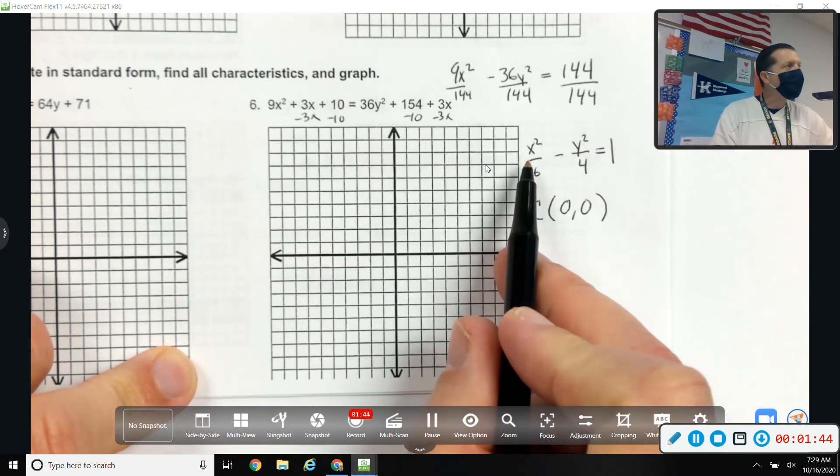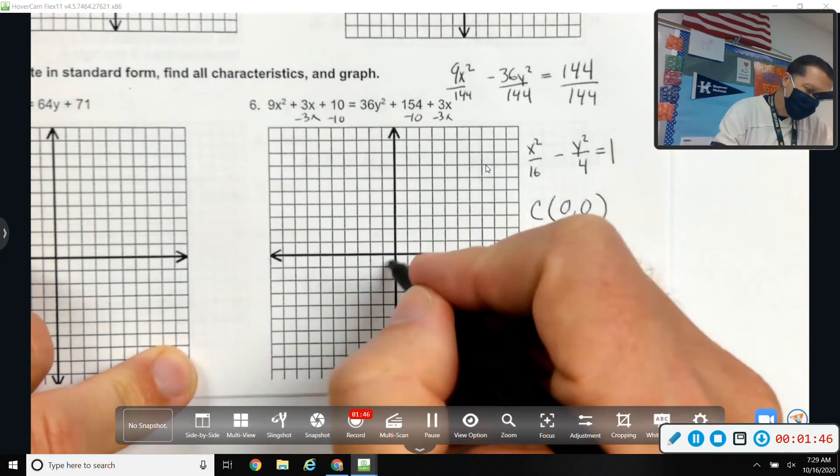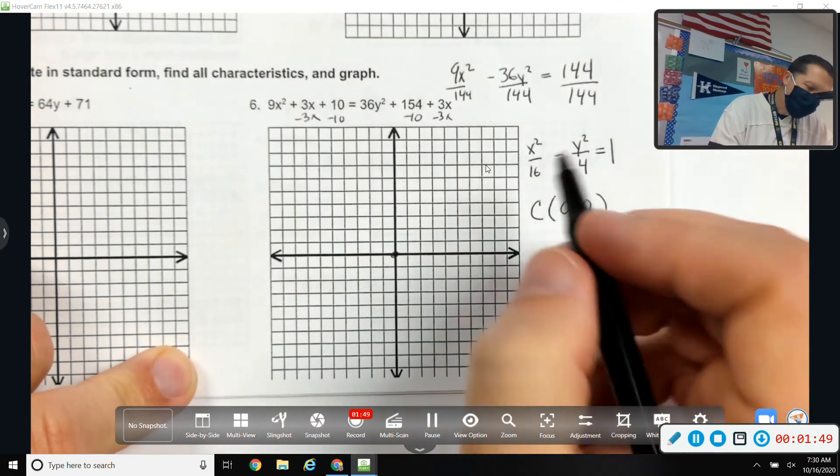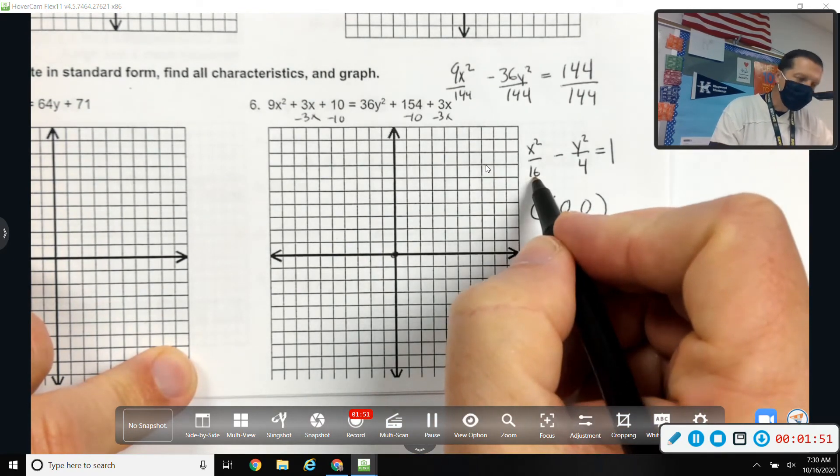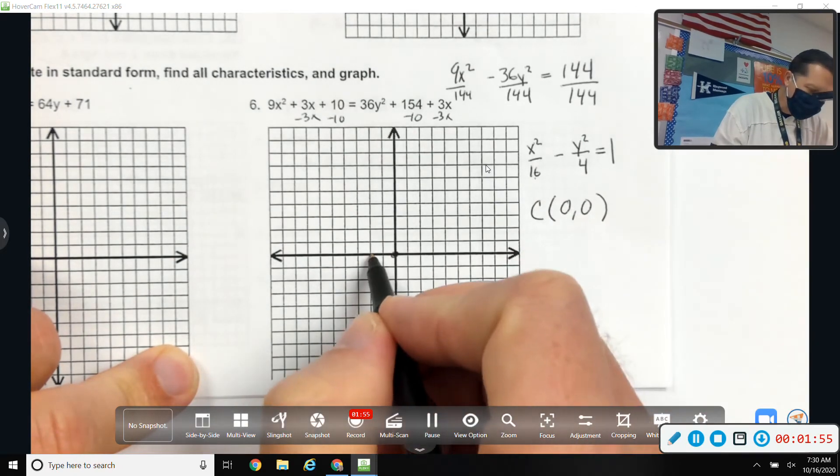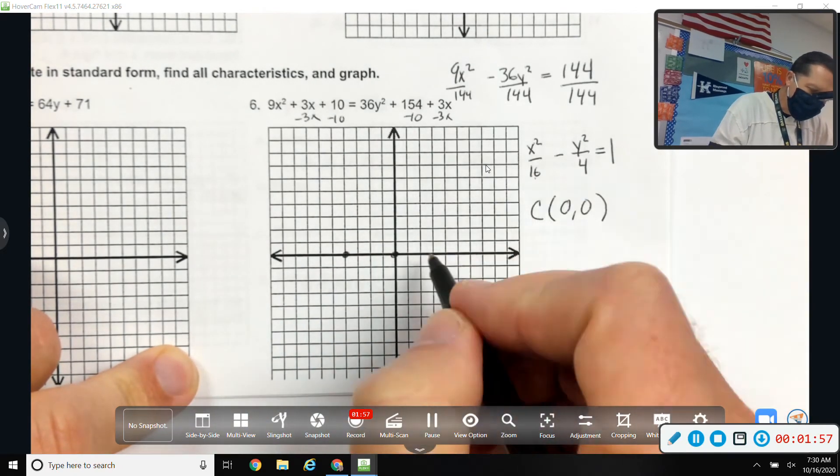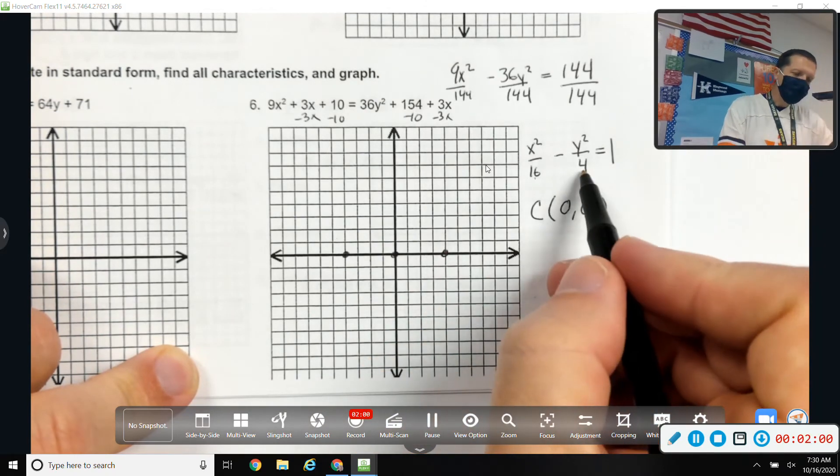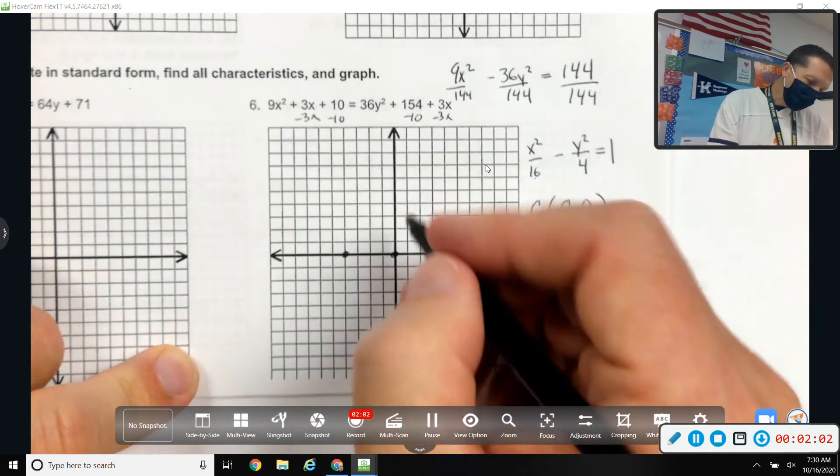It's like there's x minus 0 and y minus 0 there. So, 0, 0 for the center. I'll go left and right 4. Again, I'm not really worried about a and b. If it's under x, go that many in x. So, left and right 4. If it's under y, go that many in y. So, up and down 2.